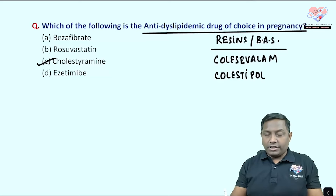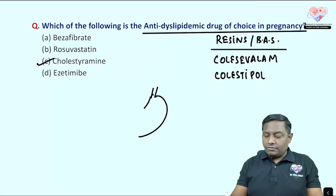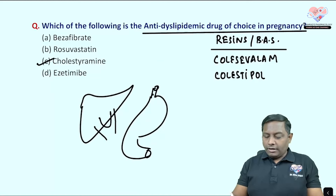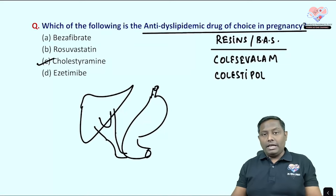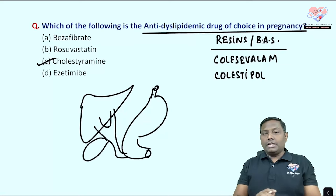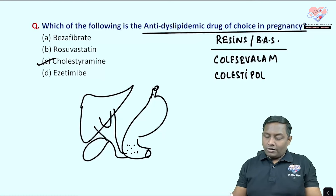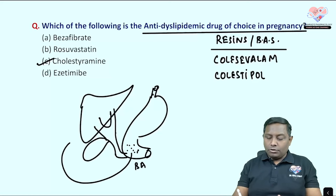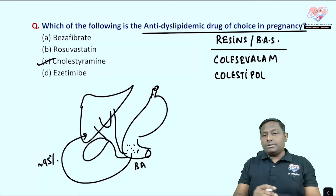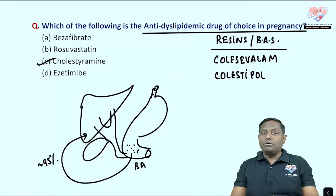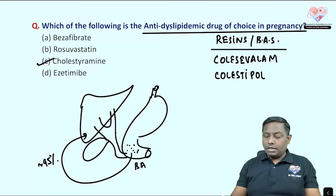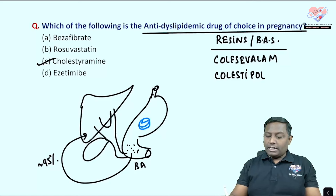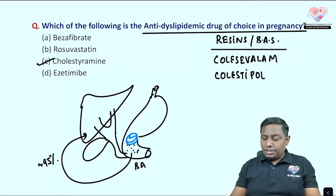The site of action of bile acid sequestrants is mainly in the GI tract. Bile acids released in the gut aid fat breakdown, and nearly 95% of bile acid is normally reabsorbed back into circulation. The drug chelates these bile acids in the intestine.